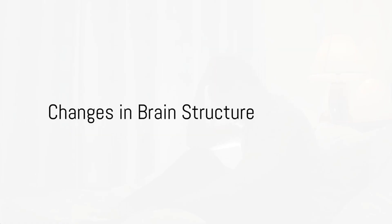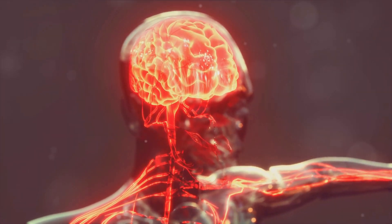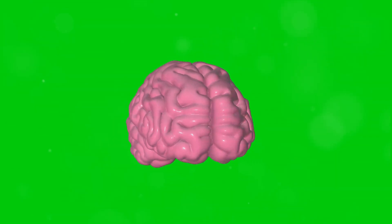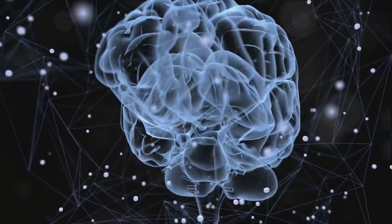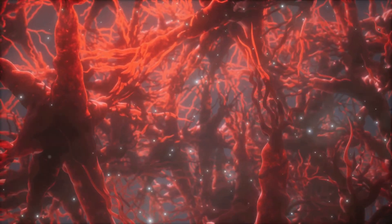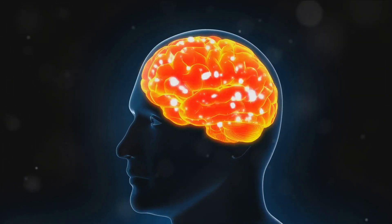Worryingly, isolation can lead to physical changes in the brain. It's not just about how we feel. It's also about how our brain structures adapt due to the lack of social interaction. In fact, studies have discovered that social isolation can lead to a noticeable reduction in gray matter volume. This isn't just any part of the brain we're talking about. The areas affected are critically associated with social cognition and emotional regulation.